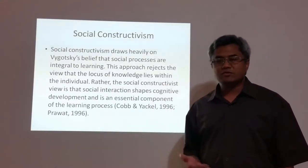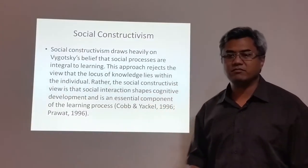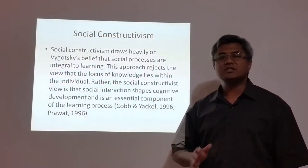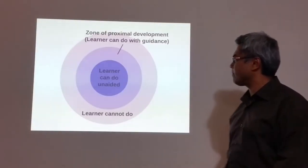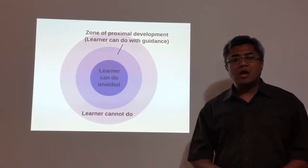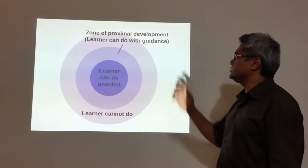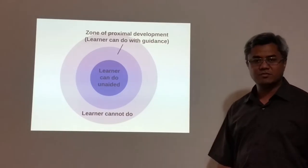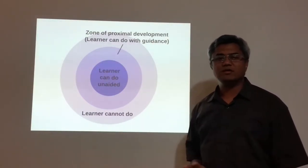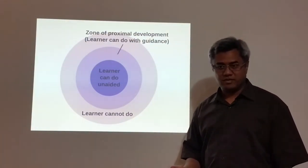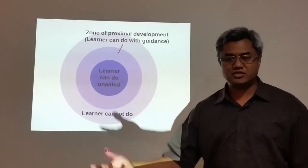Now, in terms of development, Piaget says that development precedes learning. But Vygotsky says that it is learning that precedes development — it is because we learn, therefore we develop. Vygotsky's learning theory suggests this thing called the zone of proximal development. What that means is that this is the area of what the learner can do by himself, and there is an area where the learner cannot do, which is actually their potential development.